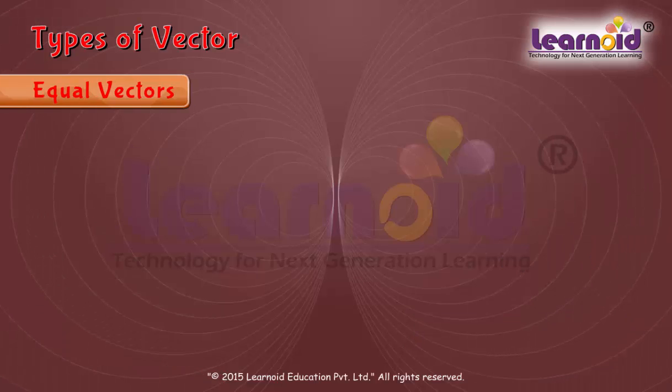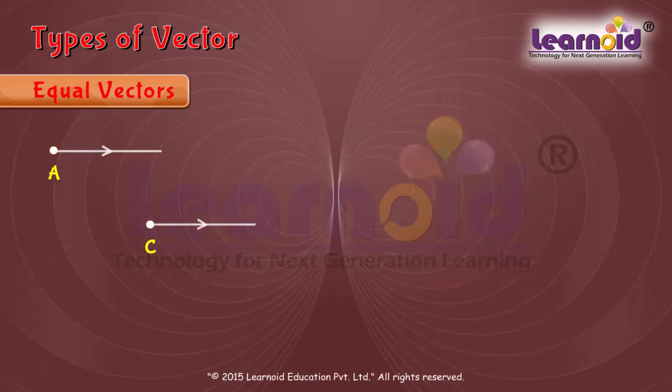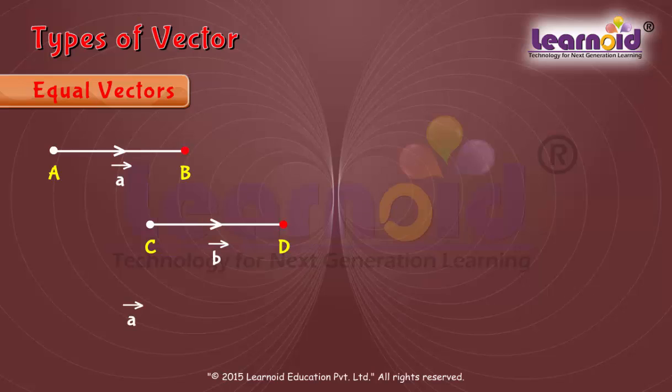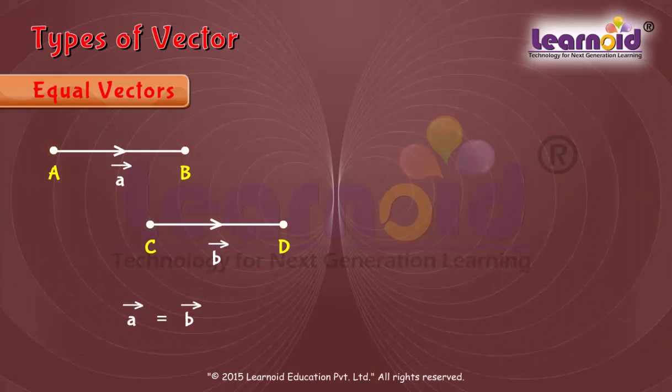Two vectors A and B are said to be equal if they have the same magnitude and direction, irrespective of their initial points.